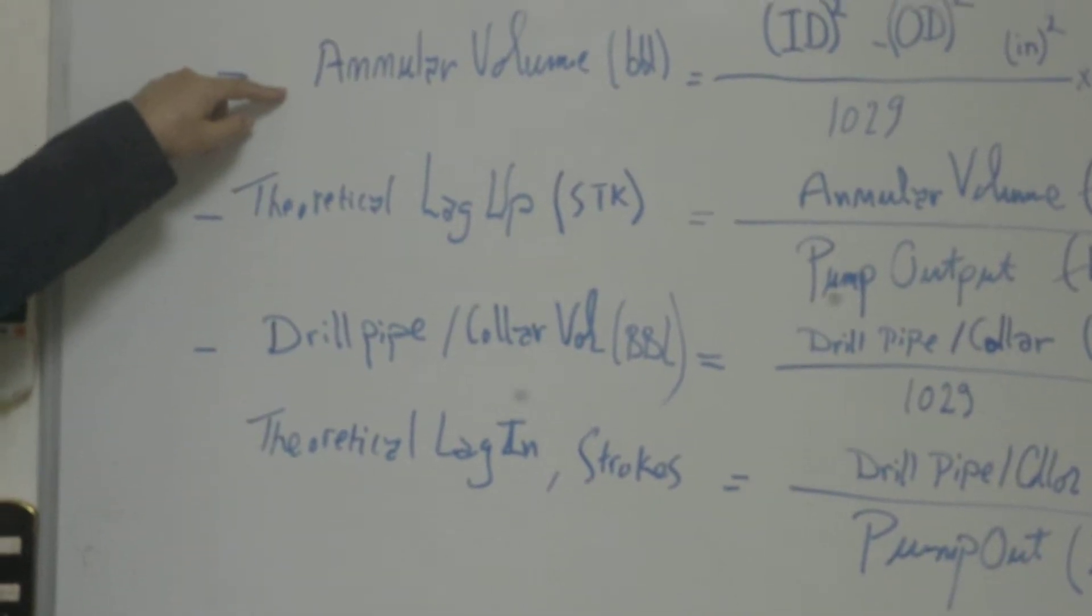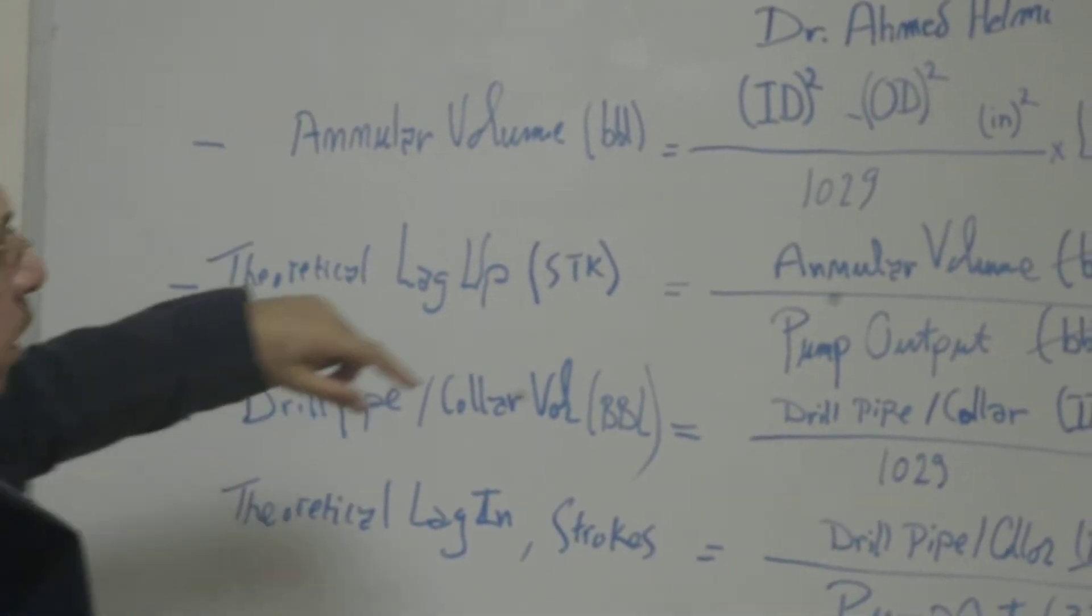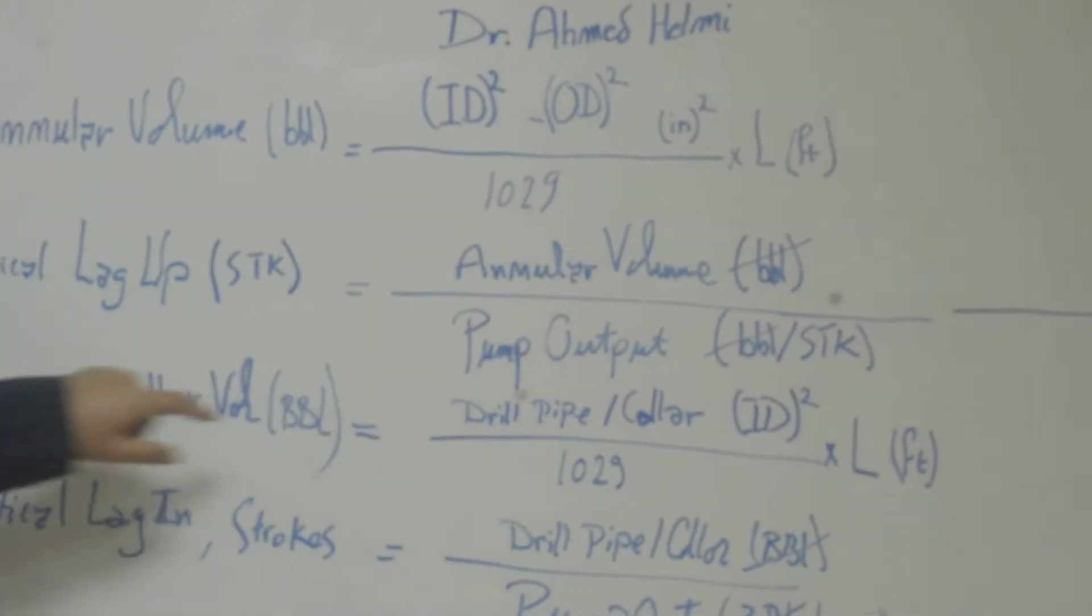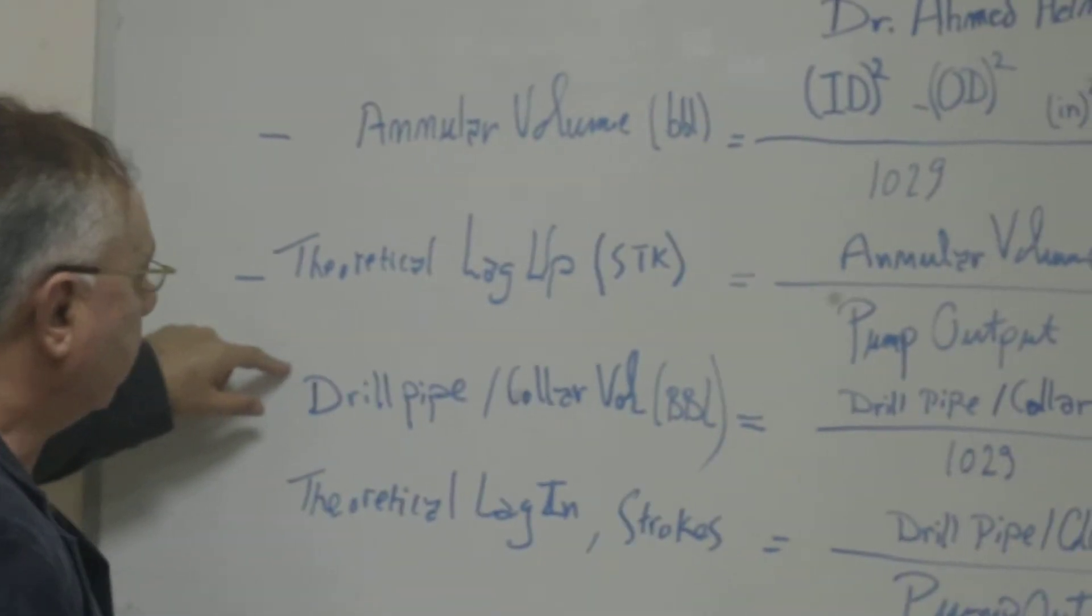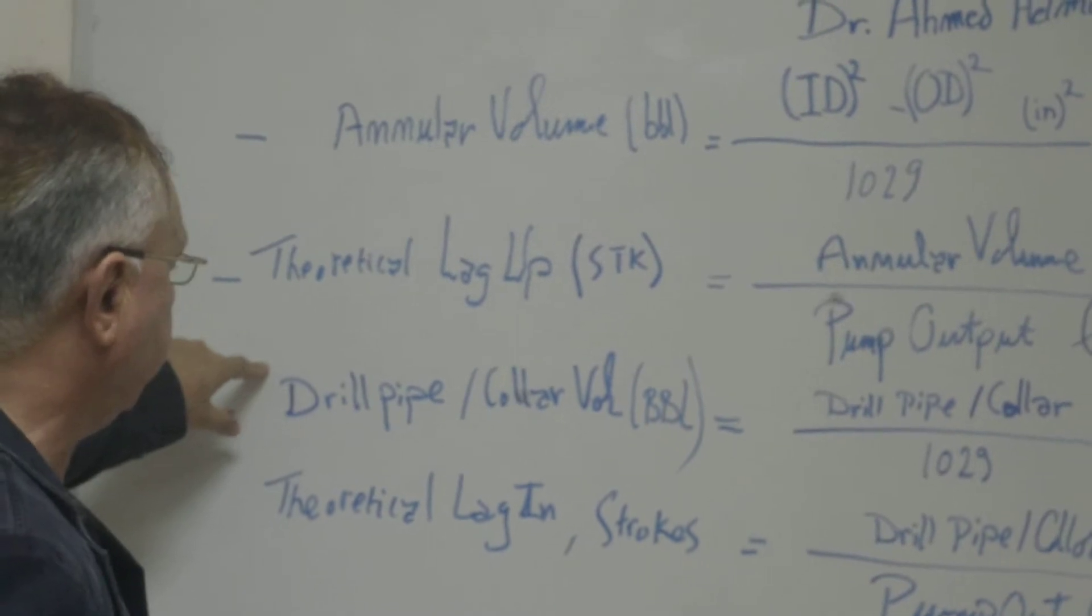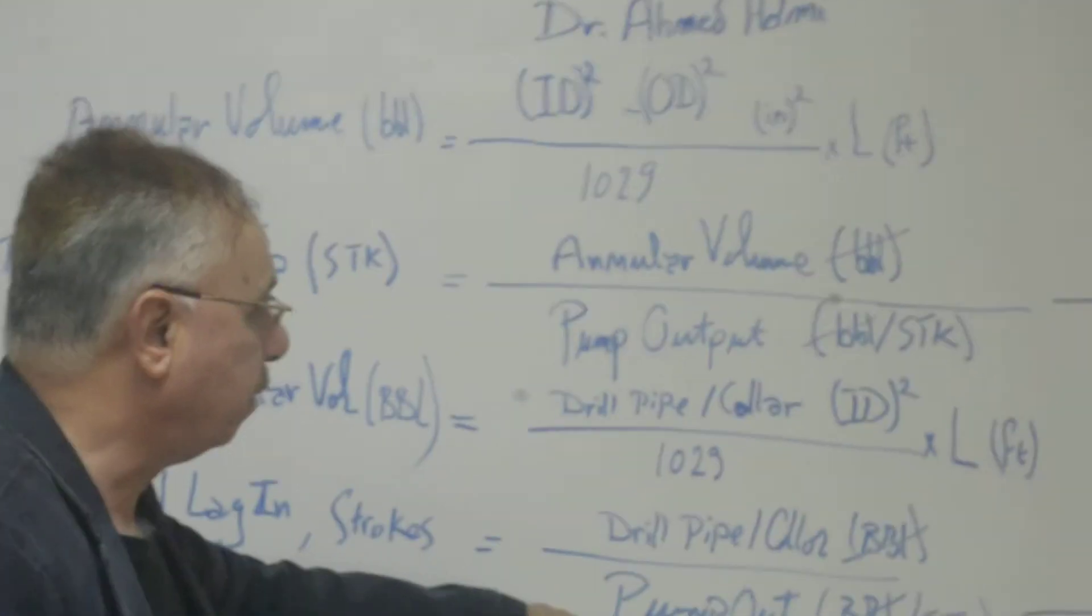First step: calculate the volume, then divide by the pump output. Again, calculate the volume in the pipe, divide by pump output.